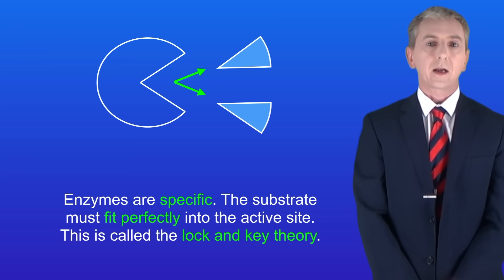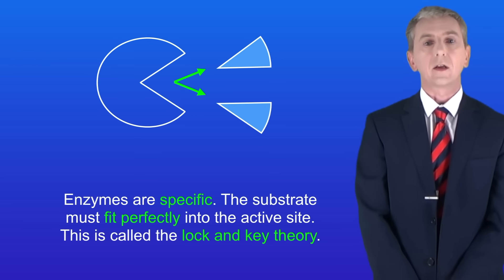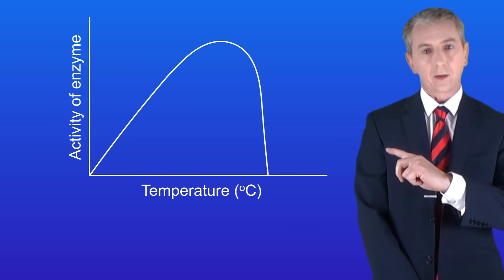Imagine I've got an enzyme catalyzed reaction and I gradually increase the temperature. At each temperature I measure the activity of the enzyme, in other words the rate of the reaction. I get a graph that looks like this.